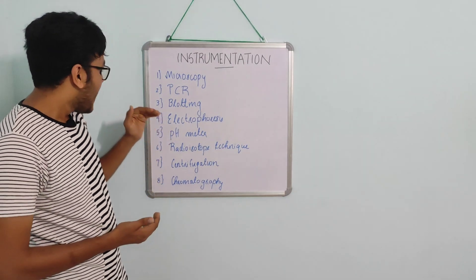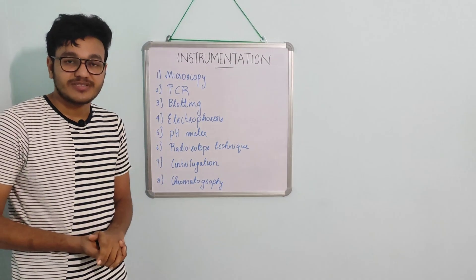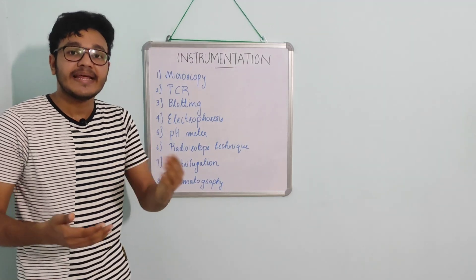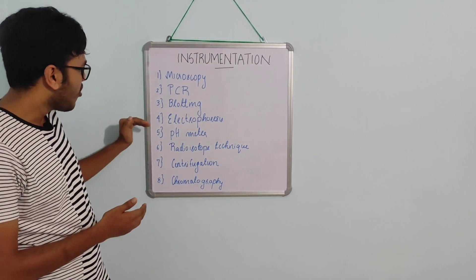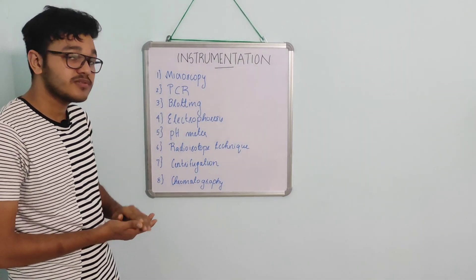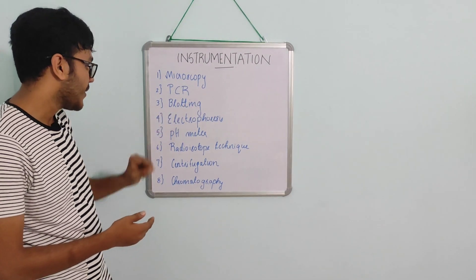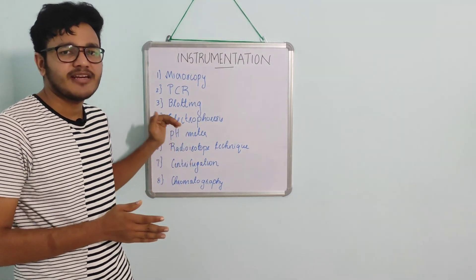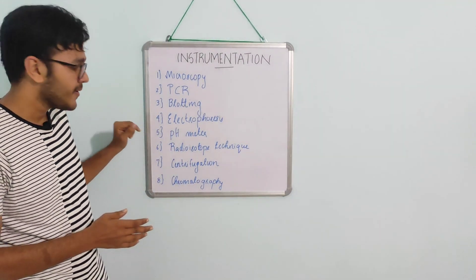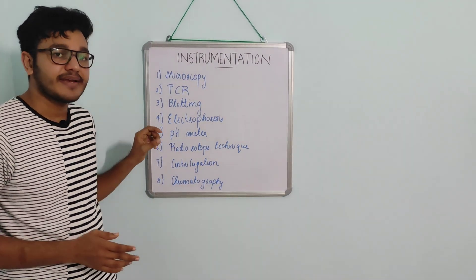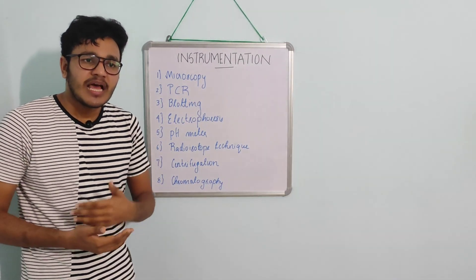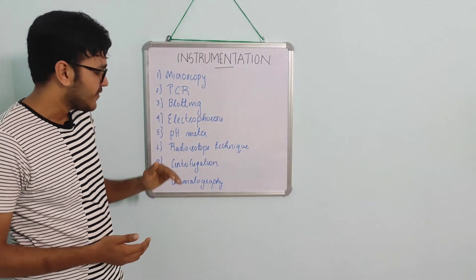The fourth one is electrophoresis. We have to learn the technique of how DNA is separated. We have only a brief vague idea about electrophoresis; we have to go in depth on this latest topic. Next is pH meter; we have to discuss only a brief account of what is a pH meter. The sixth one is radioisotope technique, which is the use of radioisotopes in determining biological pathways.